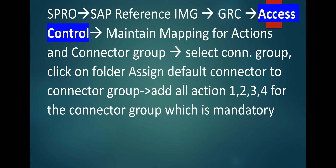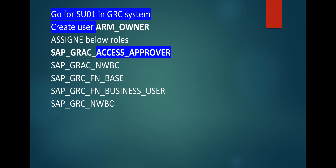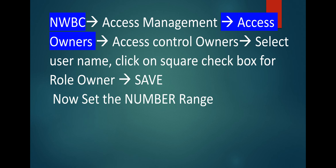Add all actions 1, 2, 3, 4 for the connector group, which is mandatory. After access control and common component setting, go to SU01 and create a user with ARM access approval role. For this ARM owner, we need to assign role SAP_GRC_EXITS_APPROVER, and it is a GRC user. So we are going to assign three common roles: NWBC base role and business user role.